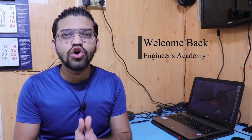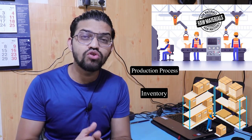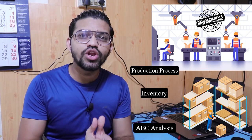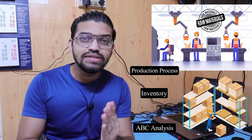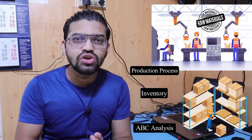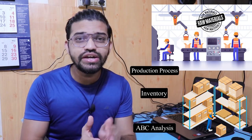Welcome back to Engineers Academy. Today's video is related to the manufacturing industry. When you visit a manufacturing industry where a product is being manufactured, a certain amount of raw material is required — that raw material is known as inventory. You must have heard the term ABC analysis, which is a statistical approach to control inventory.